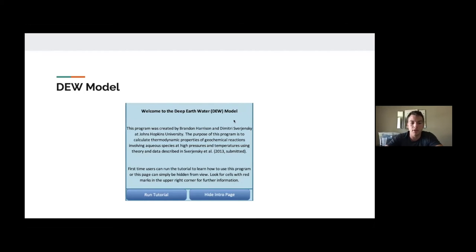To calculate these, we use something called the Deep Earth Water or the DEW model, which was created by Brandon Harrison and Dmitrys Sverjensky at Johns Hopkins University. It was used to calculate thermodynamic properties of geochemical reactions involving aqueous species at high pressures and temperatures, modeling pretty much any hydrothermal system that's going on either on Earth or on Enceladus. I'm going to hand it over to Shenzi and she's going to give you a brief introduction to the calculations we conducted and pretty much what we found.